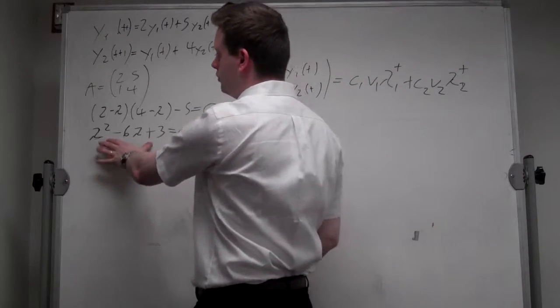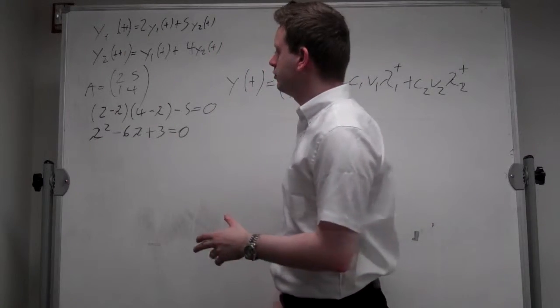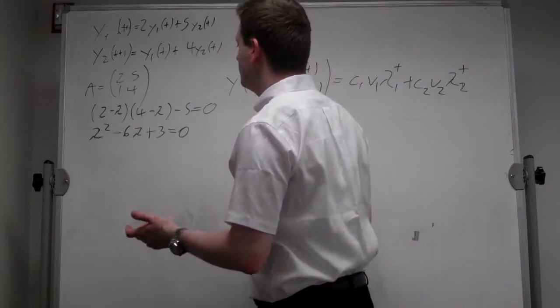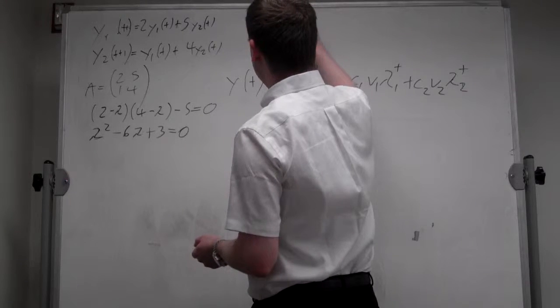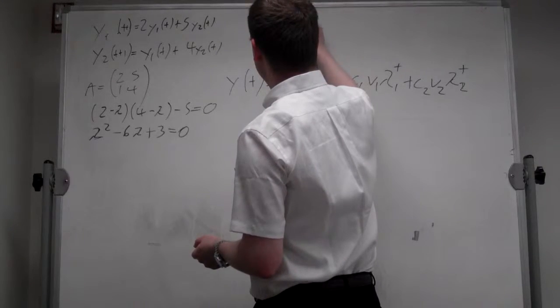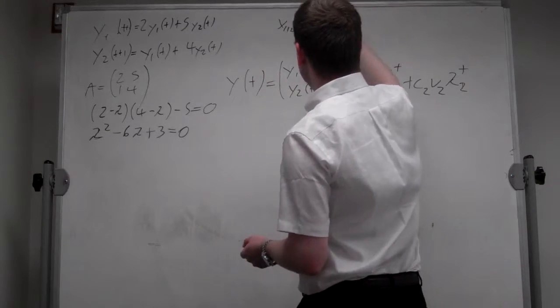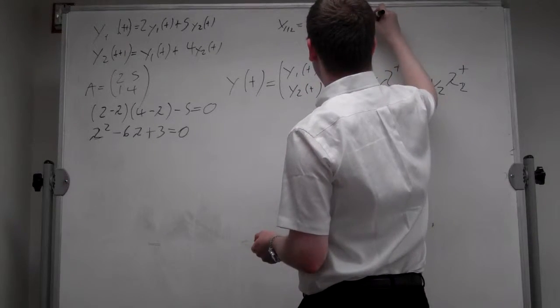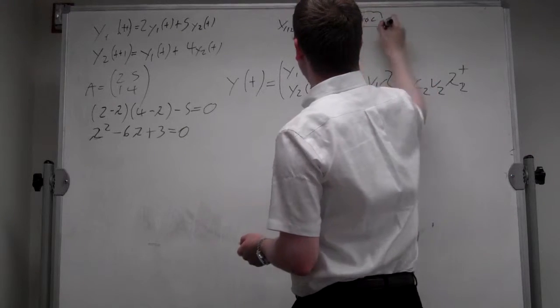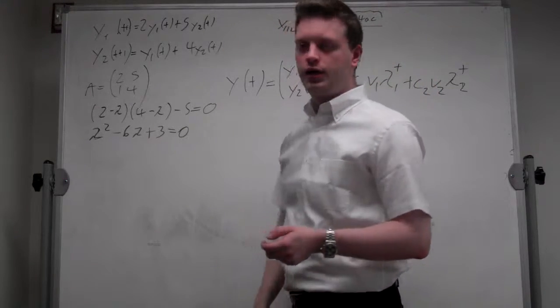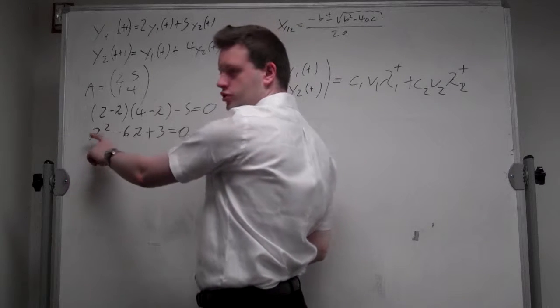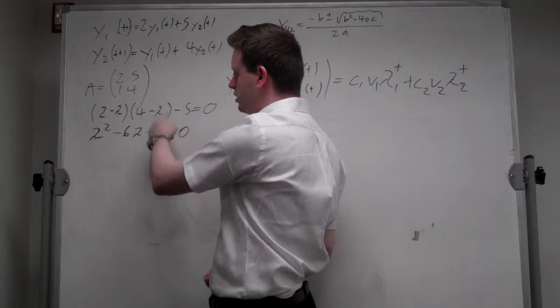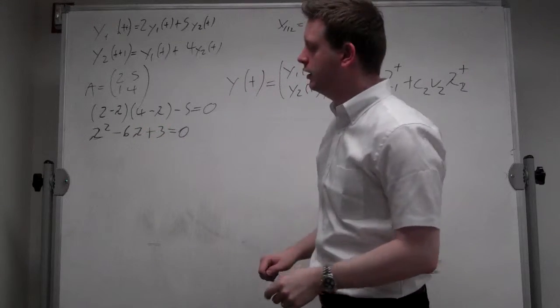Now this we cannot put in a simpler form. So we need to apply the formula to solve quadratic equations. In particular, if you have a quadratic equation, x_1,2 is equal to minus b plus minus the square root of b squared minus 4ac over 2a, where a is the coefficient of the x squared, b is the coefficient on x, and c is the remainder.